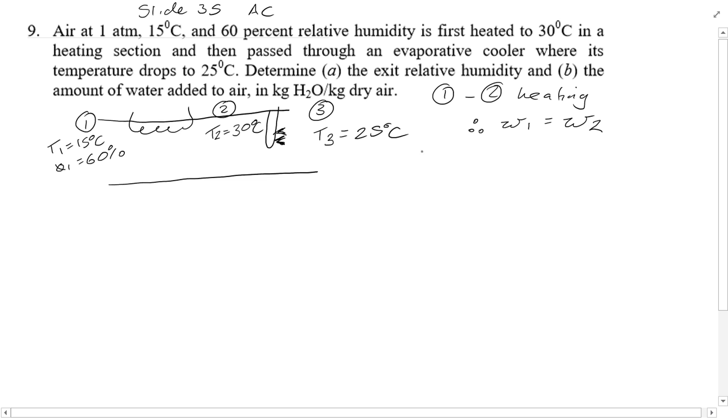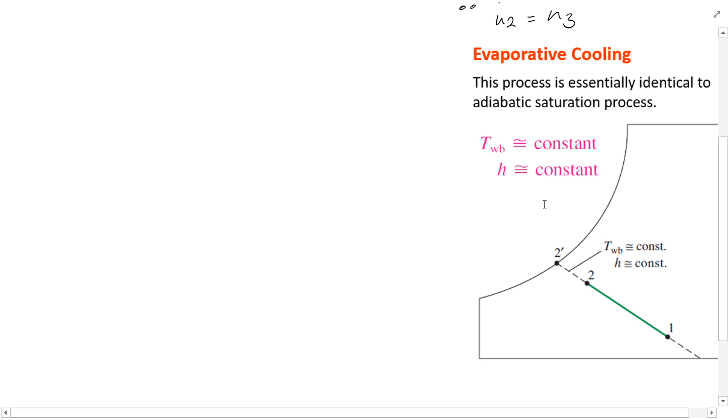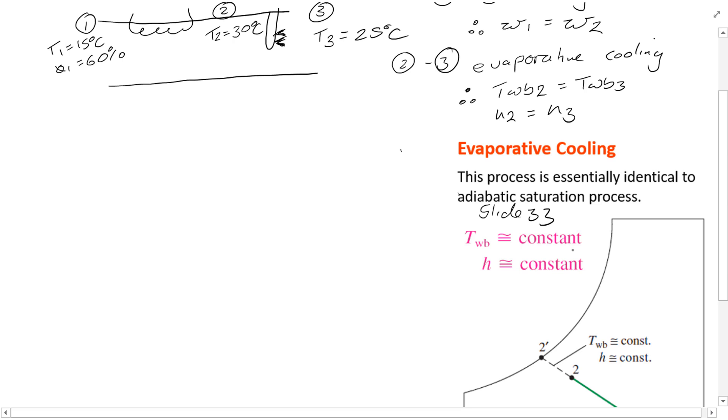Also, think about process 2 to 3. This is an evaporative cooling process. Therefore, T wet bulb 2 is equal to T wet bulb 3 and enthalpy at 2 is equal to enthalpy at 3. You can see this reminder from the notes on slide 33, and you can also find more information in the recommended textbook.